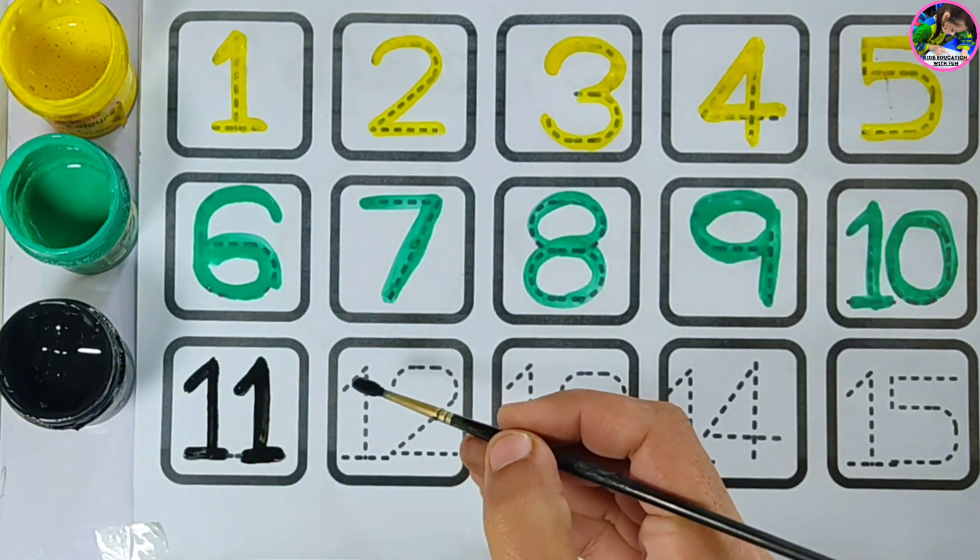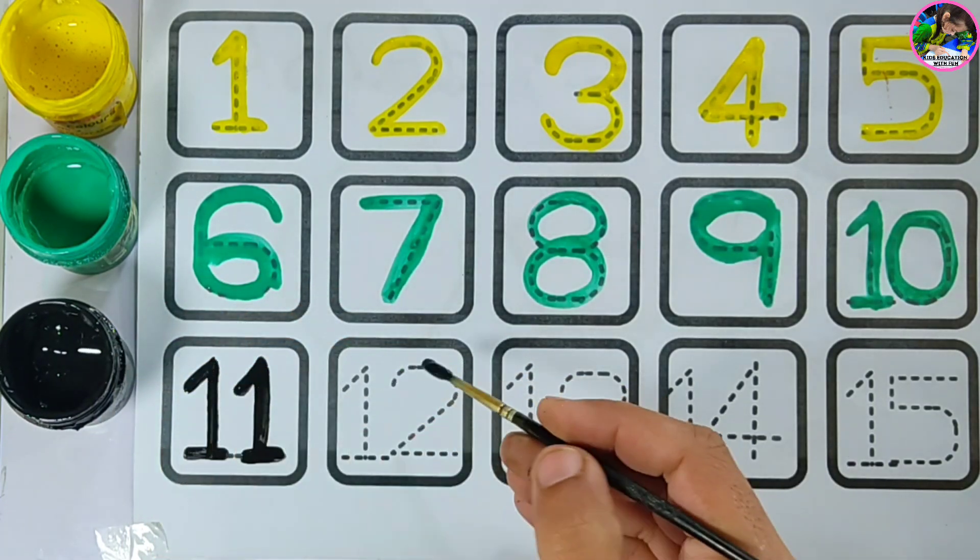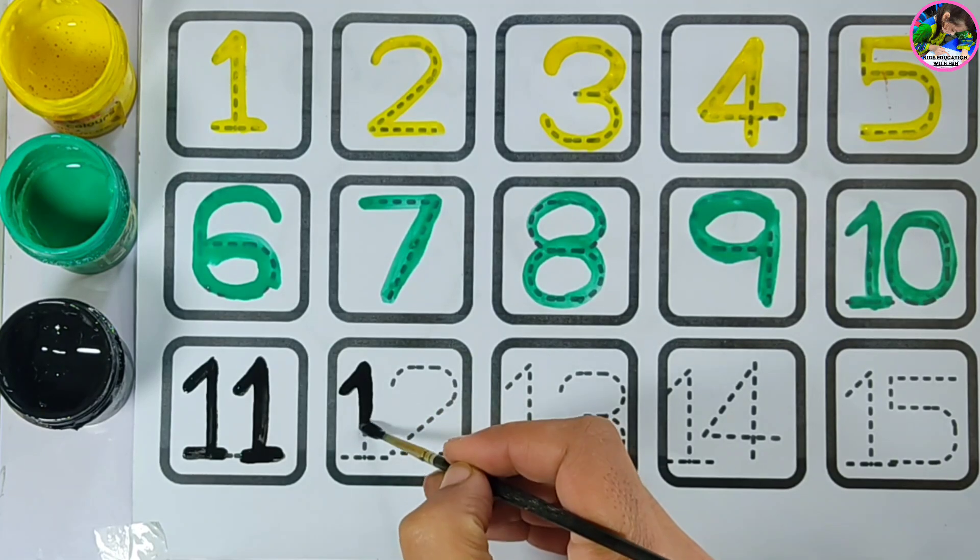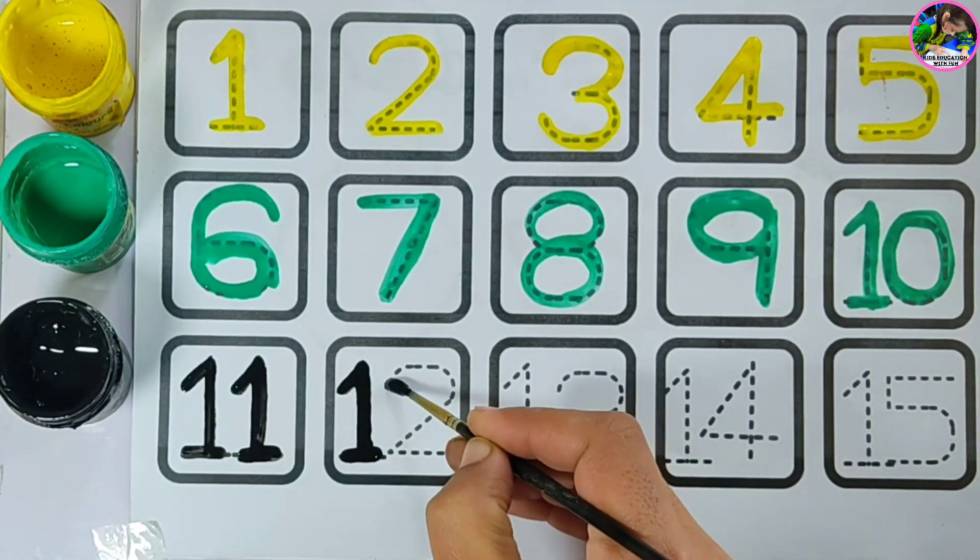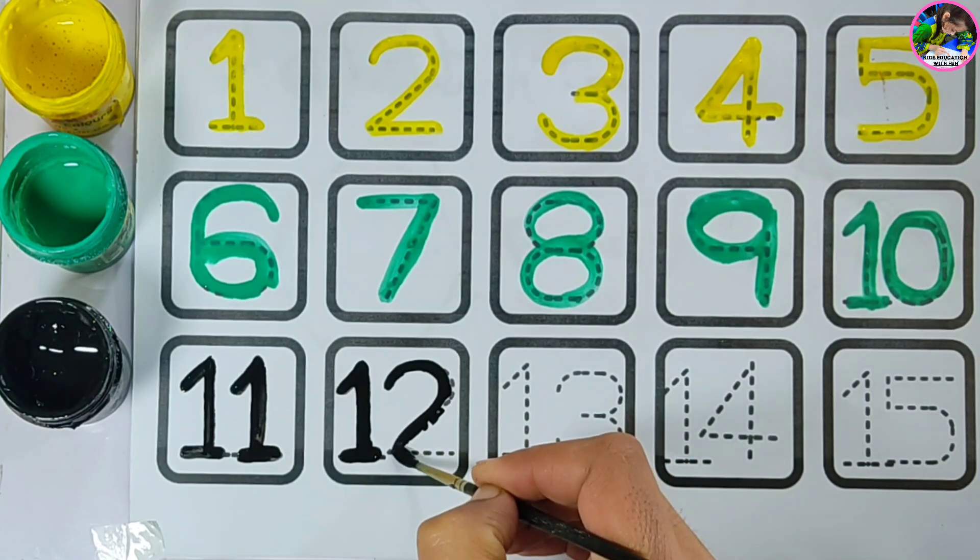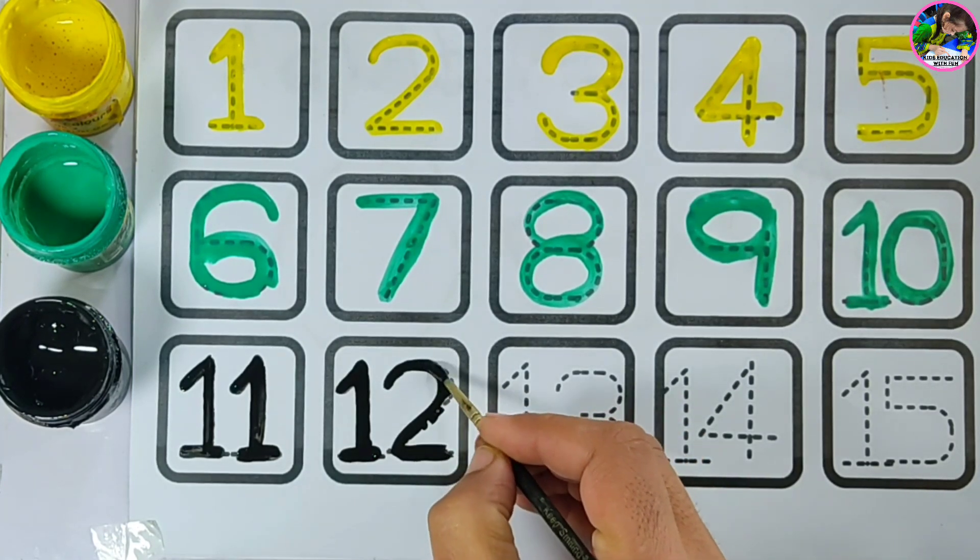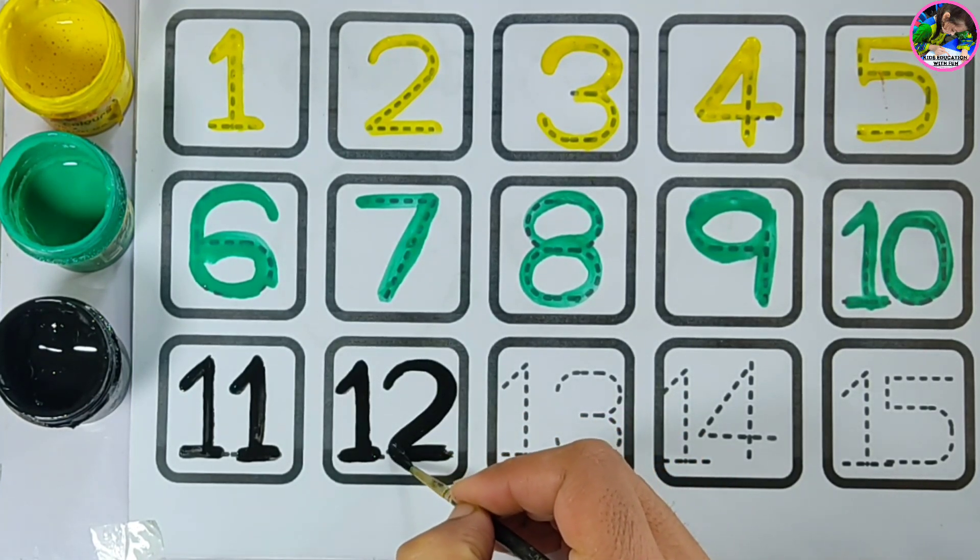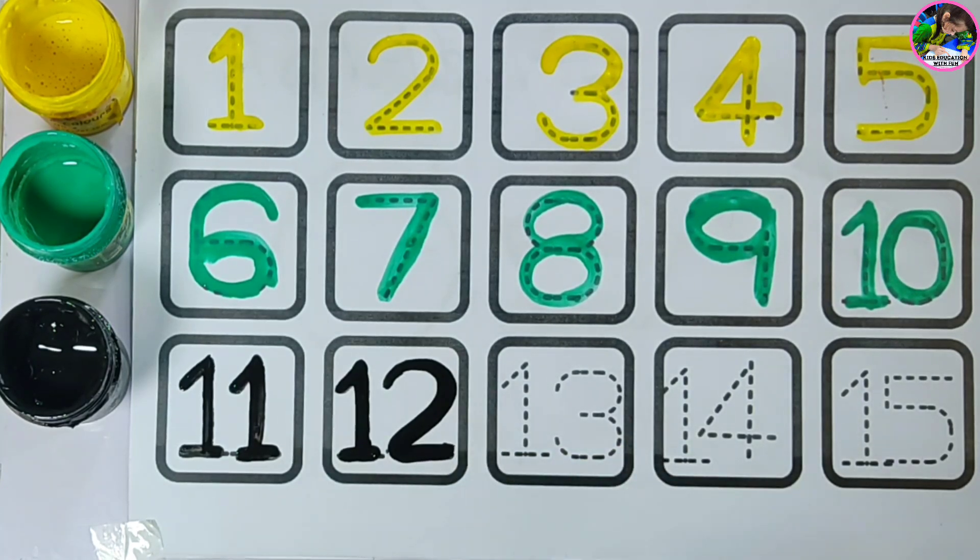Twelve. T-W-E-L-V-E, twelve. This is number twelve. You have to trace like this. T-W-E-L-V-E, twelve.